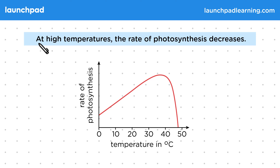At high temperatures, the rate of photosynthesis decreases. This is because the enzymes within the plant will get denatured around this point.